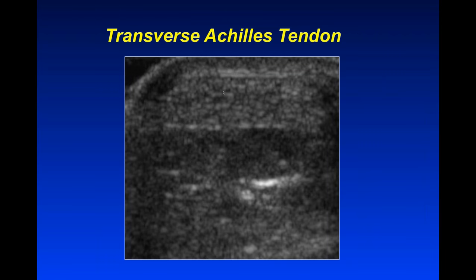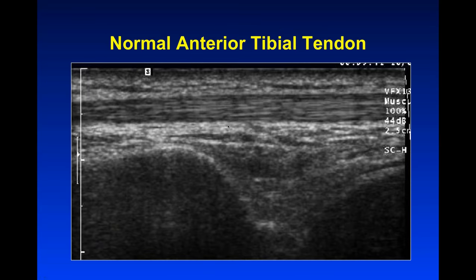When you go transversely on a tendon, it will have what we call the brush pattern — almost like cutting a fiber optic cable in cross-section. Where you see fibers in longitudinal, cutting them in cross-section gives you bright and dark dots coming toward you. This is demonstrated here with a cross-section of a normal Achilles tendon and an anterior tibial tendon, again showing that fibrillar pattern. The point is that tendons have this signature, so when you see it, you know that's a tendon.